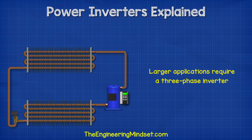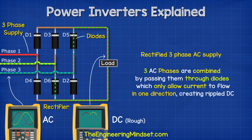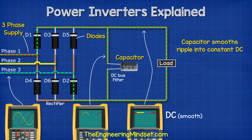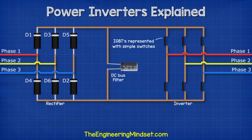Larger applications require a three-phase inverter — for example, to run the compressors in a large cooling system. The DC supply in this case will be a rectified three-phase AC supply. That means the three AC sine waves are combined together and pass through some diodes which prevent the electrons from flowing backwards. This turns it into a ripple DC waveform. We then use a capacitor to smooth the ripple out into a constant DC supply. We have covered this in great detail previously — links down below.